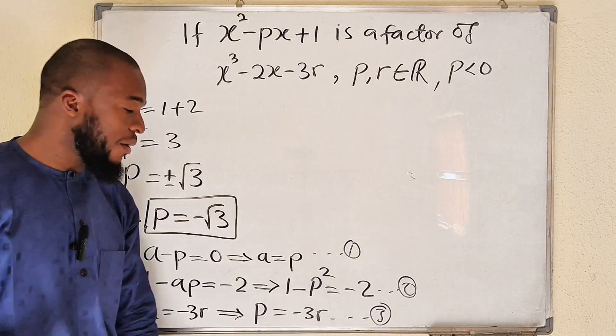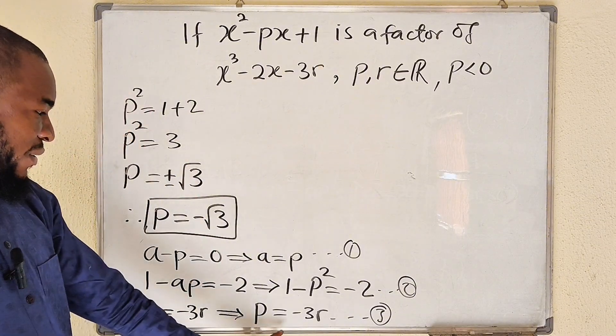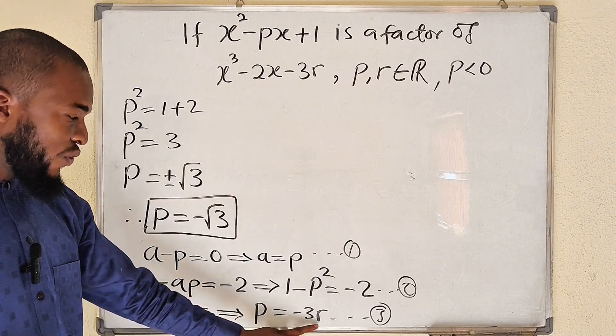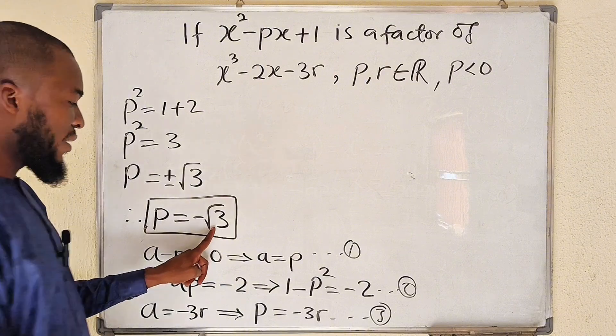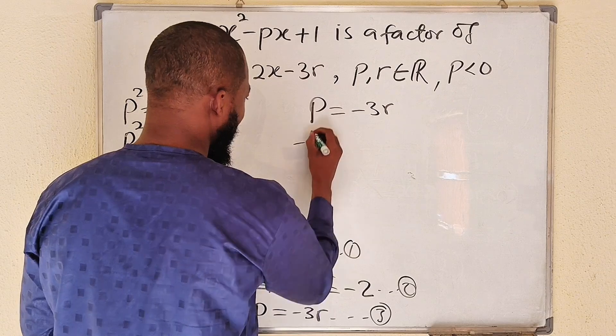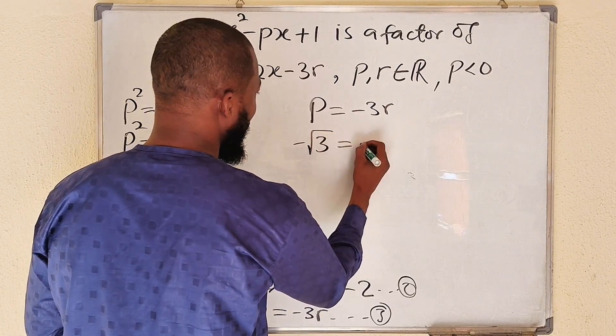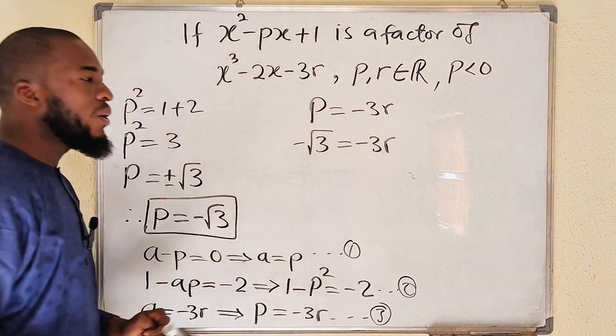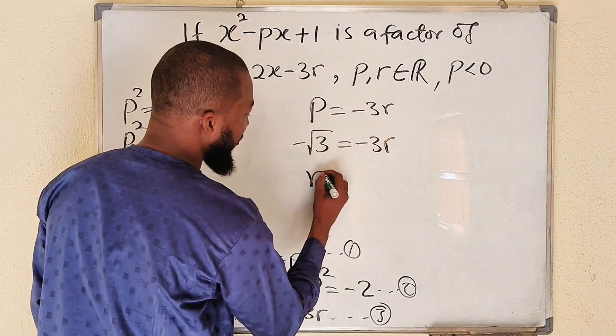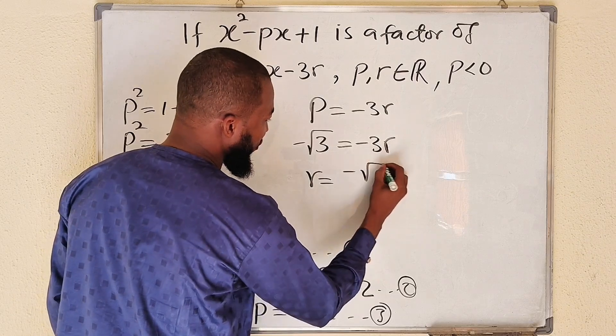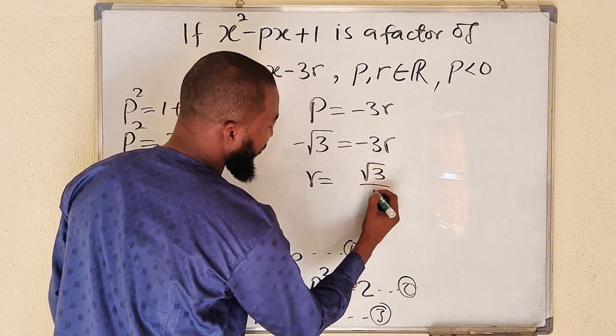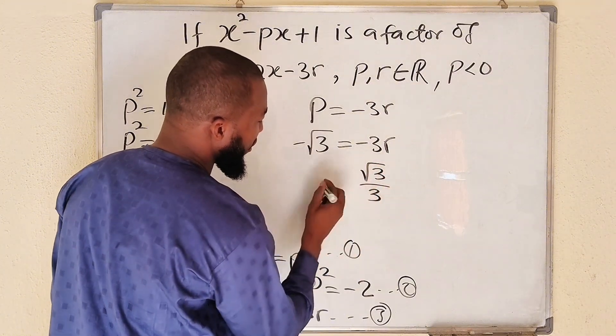Next, we are going to find r. So we can use this last equation to find r. We have seen that p equal to negative 3r. But p is now this. p equals negative square root of 3 equals negative 3r. To find r, we are going to divide both sides by its coefficient, which is negative 3. Therefore, r equals negative square root of... negatives will cancel automatically. So this is negative square root of 3 divided by 3. So this is r.